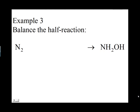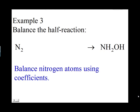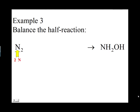Start by balancing nitrogen atoms using coefficients. There are two nitrogen atoms on the left side and only one on the right side, so you need two nitrogen atoms on the right side. Add the coefficient 2 in front of NH2OH.